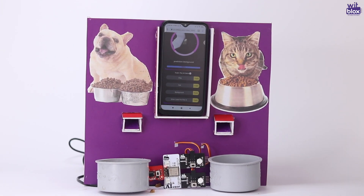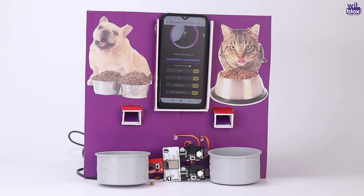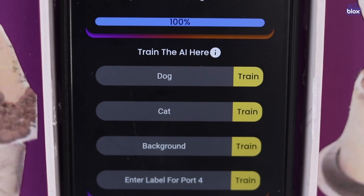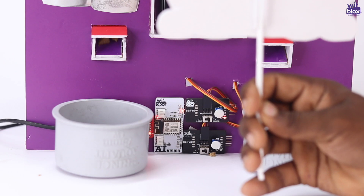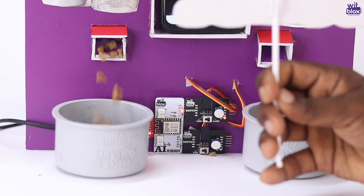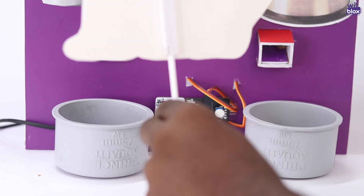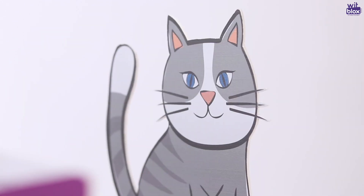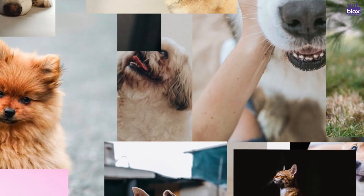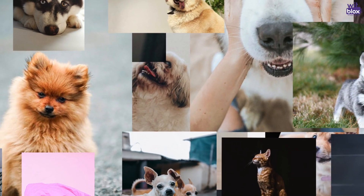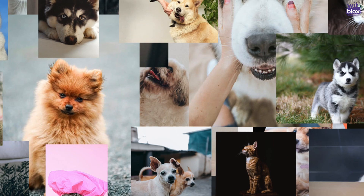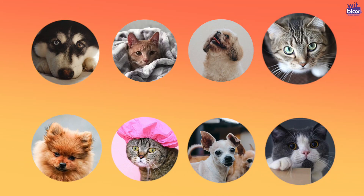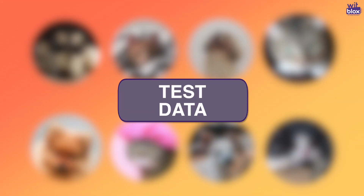For training the model, we click images of dog and cat along with images of the background and provide them with the respective labels. After this, the model learns to differentiate between them, and then we test the model on the pet props again. All the images used to train the model are called training data, and images used to test the model are called test data.